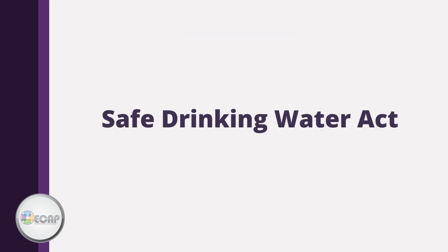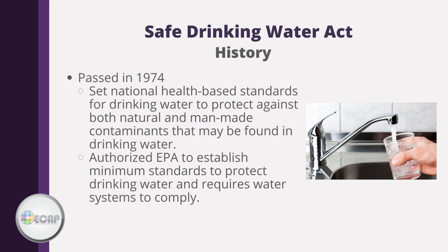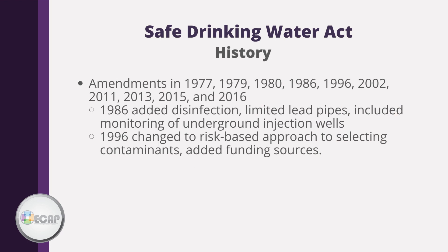The Safe Drinking Water Act was passed in 1974 and set national health-based standards for drinking water to protect against both natural and man-made contaminants. The law authorized the EPA to establish minimum standards that water systems must comply with, and gave states the lead role in implementation and enforcement. The Act has had many amendments: in 1986, it added disinfection, limited lead pipes, and required monitoring of underground injection wells. In 1996, it changed to a risk-based approach for selecting contaminants and added additional funding sources.